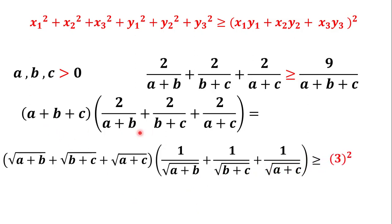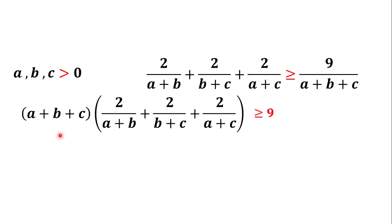So we have proved that (a+b+c) times (2 over (a+b) plus 2 over (b+c) plus 2 over (a+c)) is greater than or equal to 9, which means 2 over (a+b) plus 2 over (b+c) plus 2 over (a+c) is greater than or equal to 9 over (a+b+c). Note that we can divide both sides by (a+b+c) because a, b, and c are positive numbers, so (a+b+c) is not equal to zero.